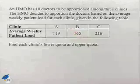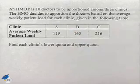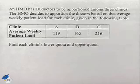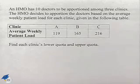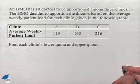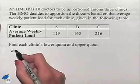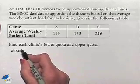Now let's look at finding the lower and upper quotas. An HMO has 10 doctors to be apportioned among three clinics. The HMO decides to apportion the doctors based on the average weekly patient load for each clinic, given in the following table. We have clinics A, B, and C and their populations. In a previous problem we found our standard quota, so let's write down the standard quota in our chart.